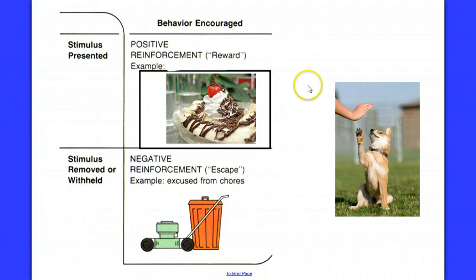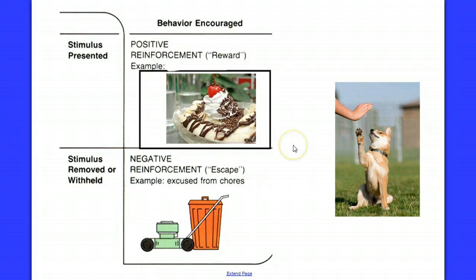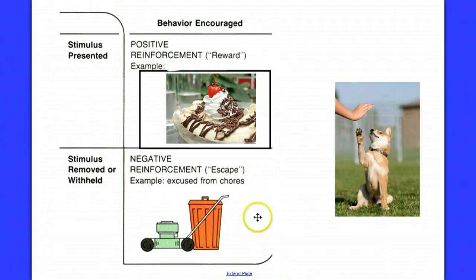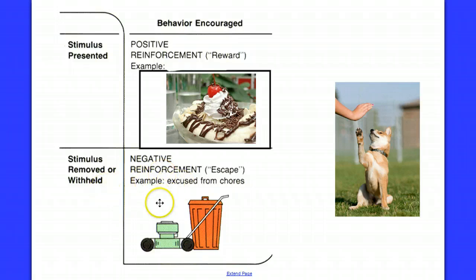Another visual example: if they clean their room, they get an ice cream sundae — so the cleaning behavior is reinforced, and that's positive reinforcement. Or if they score a good grade on their test, they get excused from chores — that's negative reinforcement, removing something undesirable.